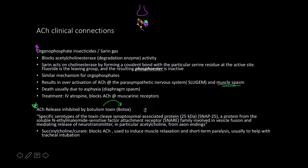Botulism toxin cleaves the synaptosomal-associated protein SNAP25, which belongs to the SNARE family involved in vesicle fusion and mediating the release of neurotransmitters — specifically acetylcholine from axon endings. When botulism toxin is present, none of the acetylcholine is released from the vesicles, so muscles cannot contract and are paralyzed.